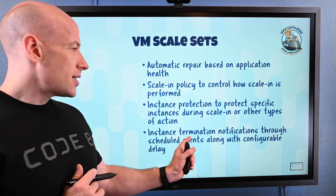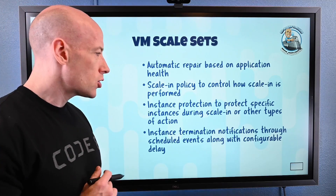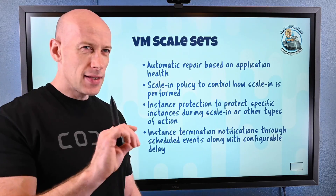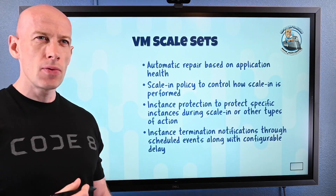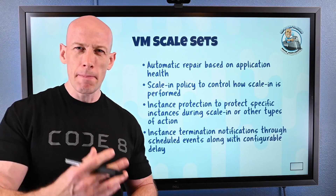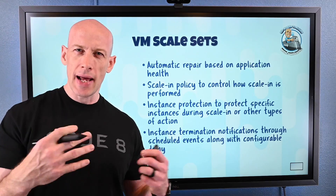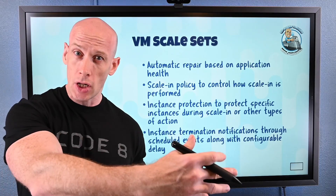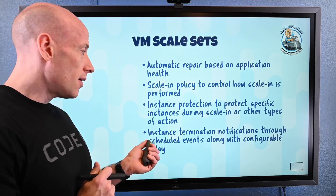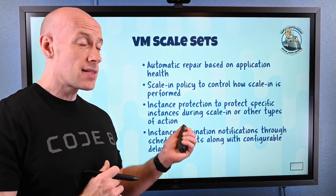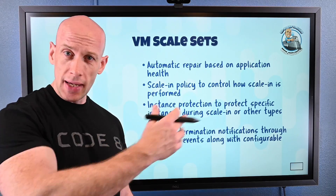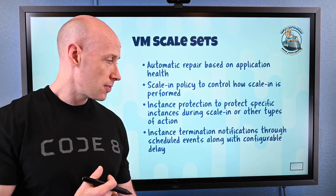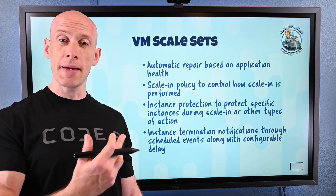You can get instance termination notifications through scheduled events, with a configurable delay. We have certain maintenance activities that can happen in Azure — for VMs, we get notified if a reboot is going to occur. Now, if an instance is going to get terminated because of scale activities, we can get notified and have a configurable delay to go and do something first.